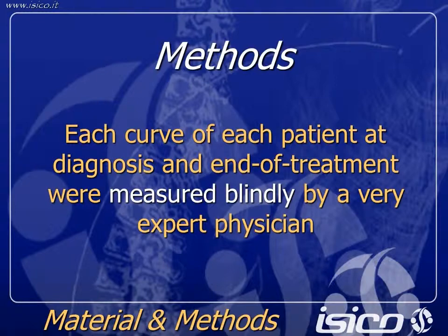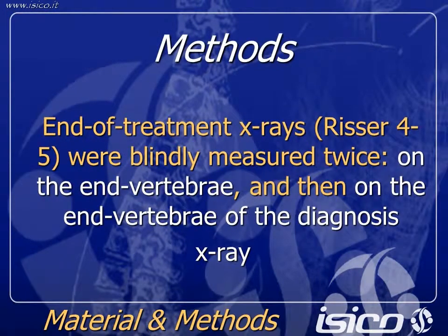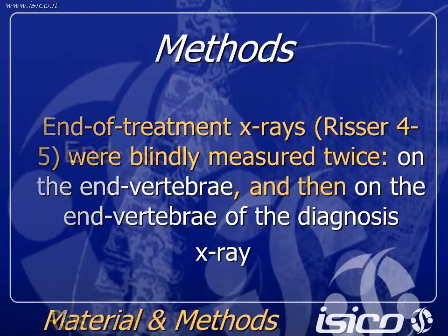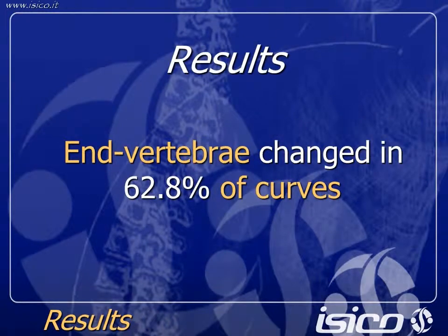Each curve of each patient at diagnosis and end of treatment was measured blindly by various physicians. End-of-treatment X-rays at Risser 4 or 5 were blindly measured twice: on the actual end vertebra, on the real end vertebra, and then on the end vertebra of the diagnosis X-ray.